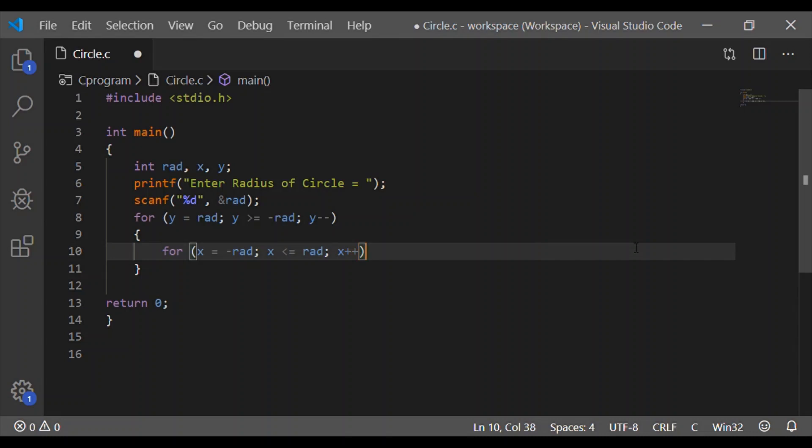So for each of the x and y values we will check if x squared plus y squared is less than the radius squared, where radius is provided as an input from the user to the variable rad.